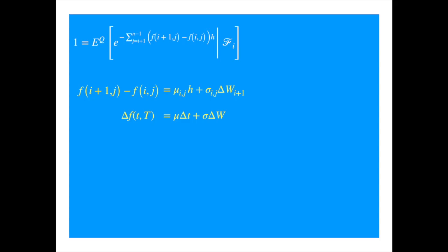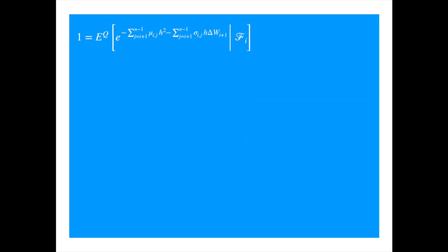Now we can substitute these into the expression, and we can expand this into two terms. Now the term in the exponent is a normal variable. Let's calculate its mean and variance. Mean is easy, because we know the expected value of the Brownian increments is equal to zero.